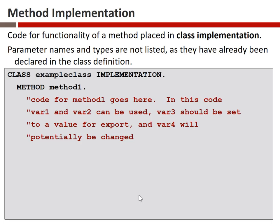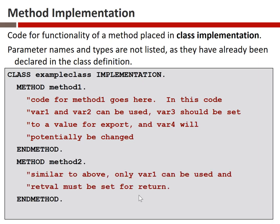The actual logic of the method is written in the method implementation — the code that goes in the class implementation section. In the implementation, we don't have to repeat the parameter names or types because they're already up in the definition. All we list is the keyword 'method', the name of the method, then its code, then 'endmethod'. For every method defined in the definition section, there is a corresponding block in the implementation section.